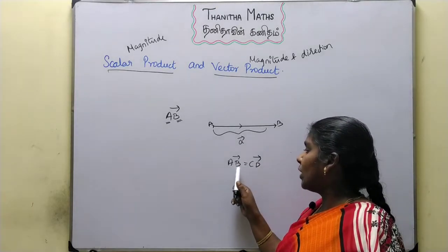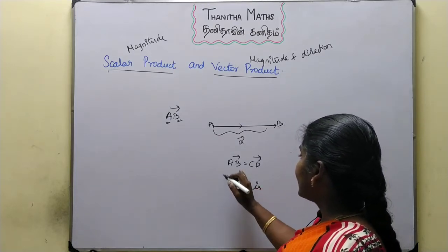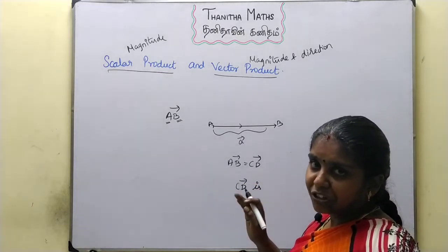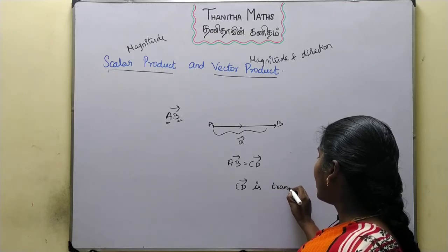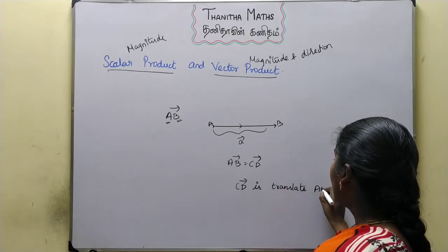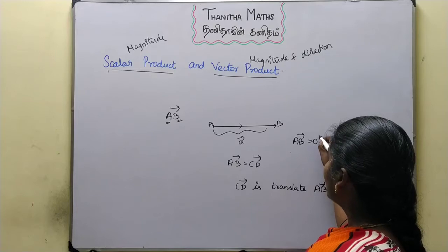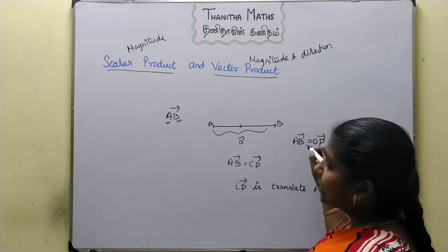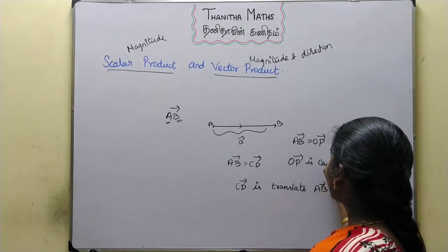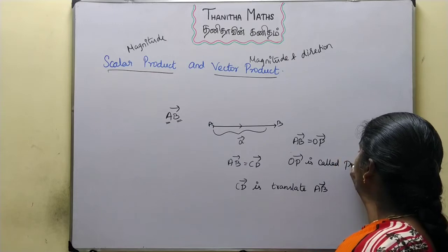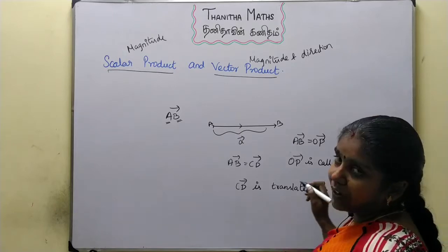If vector CD equals vector AB — both magnitude and direction are equal — then CD vector is called the translate of AB vector. Suppose AB vector equals OP vector, where O is the origin. Then OP vector is called the position vector.